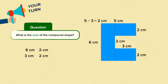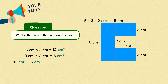Next we find the area of each simpler shape. Let's find the area of the larger rectangle first by multiplying its length and its width. 6 times 2 is 12. Next, let's find the area of one of the smaller rectangles by again multiplying its length by its width. 3 times 2 is 6. These two smaller rectangles are identical so we don't have to find the area of both. Finally, we add the area of all the shapes together. We need to add two lots of the smaller rectangle, as there are two of them. 12 plus 6 plus 6 is 24. The area of the compound shape is 24 centimetres squared.